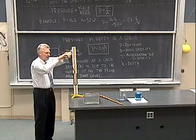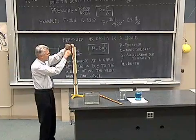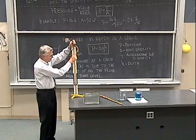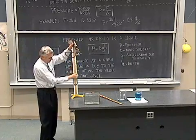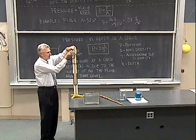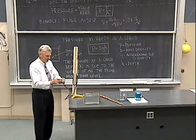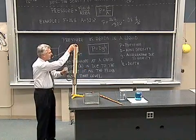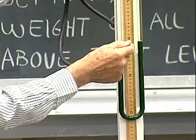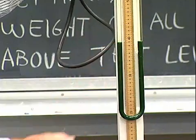Whatever pressure we apply at this point will be transmitted down through this rubber hose into this glass part of this U-tube. And so whatever pressure we sense here will also be sensed at this particular location right here.